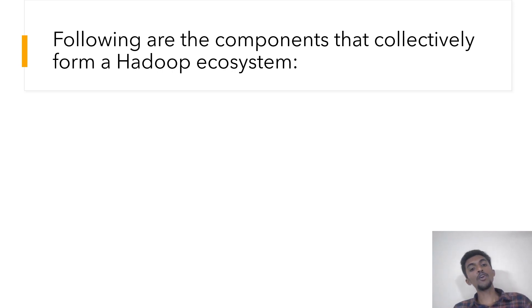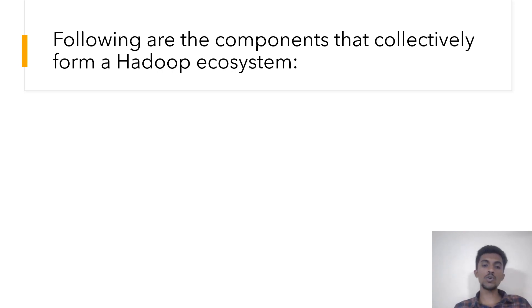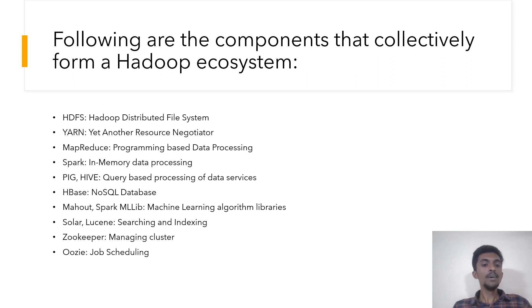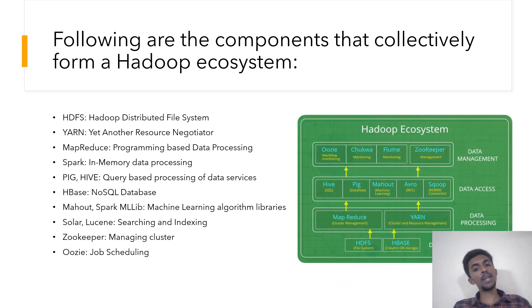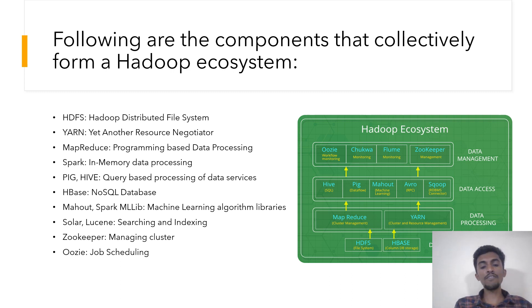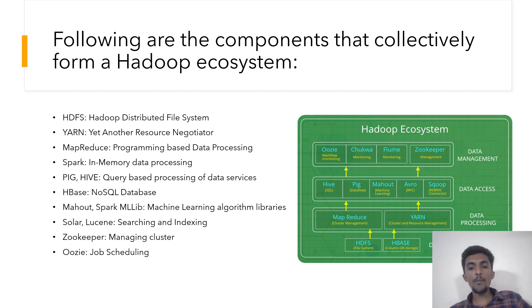This is how the Hadoop ecosystem works. Let's see the components that collectively form the Hadoop ecosystem. One single tool or component cannot form an ecosystem — there are more than one components. Those components are: HDFS and MapReduce, Spark, Pig, Hive, HBase, Mahout, Spark MLlib, Solr, Lucene, Zookeeper, and Oozie. These are some very important components that collectively form the Hadoop ecosystem. Looking at this diagram, Sqoop, Flume, Zookeeper, and Oozie come under data management; Hive, Pig, Mahout, Haro, and Sqoop come under data access; and MapReduce and YARN come under data processing.